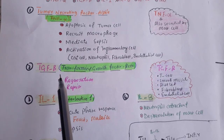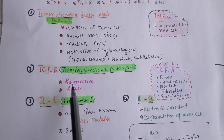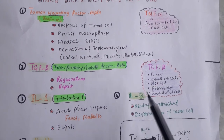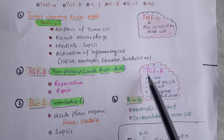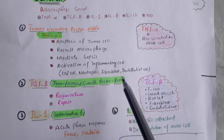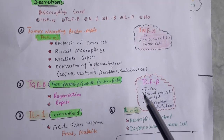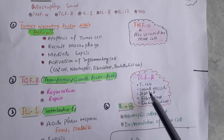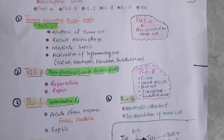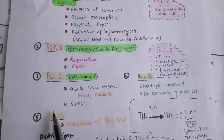Transforming growth factor beta helps in regeneration and repair. It is also secreted by T cells, smooth muscle cells, platelets, fibroblasts, and endothelium.